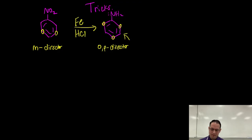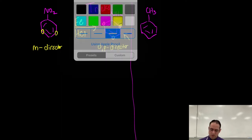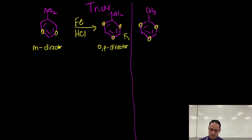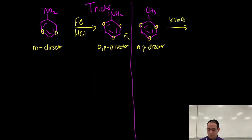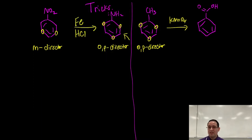Another trick often encountered: toluene has an ordinary alkyl group off the ring — a very weak ortho-para director. But if we take this substance and oxidize it with potassium permanganate, we can get benzoic acid. Because of the pi bond right adjacent to the aromatic ring, the carboxylic acid functional group is a meta-director.